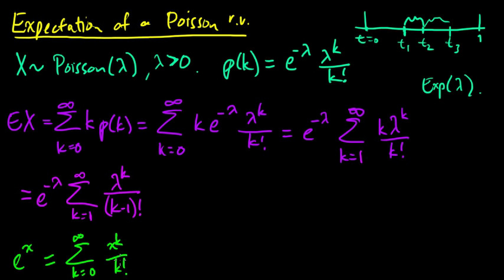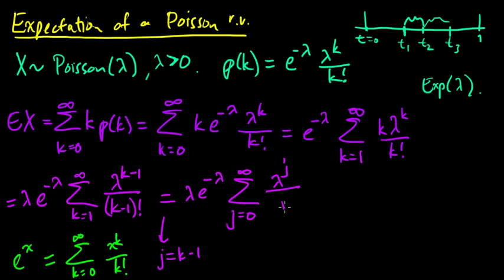And to make this look more like this, let's pull out a lambda. So let's make that k minus 1 and we'll pull out a lambda. And okay, so now we'll do the trick of letting j equal k minus 1. We get lambda e to the minus lambda. When k equals 1, j equals 0. So we can sum this up to infinity starting at 0, lambda. K minus 1 is j, so that's lambda to the j divided by j factorial.